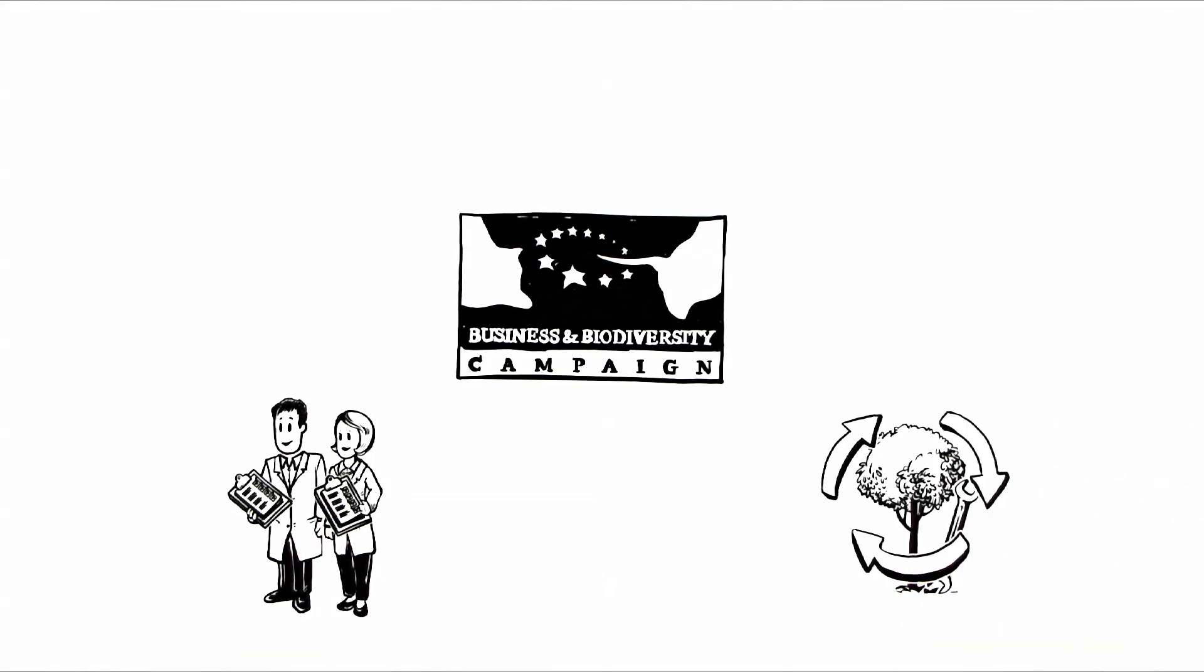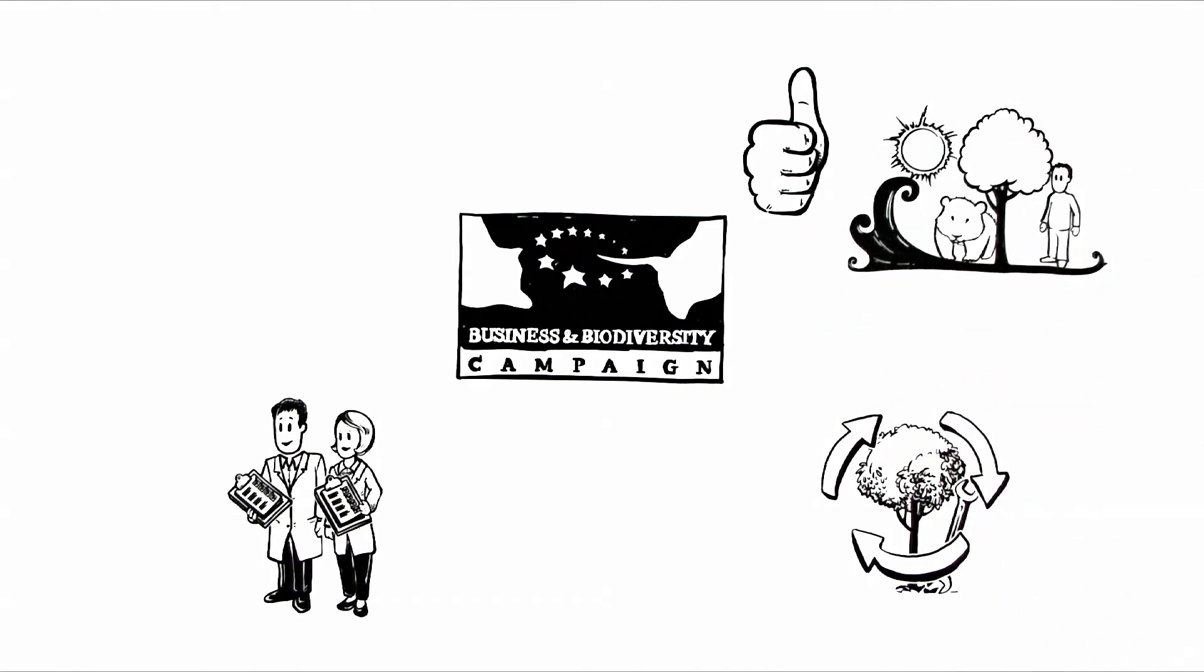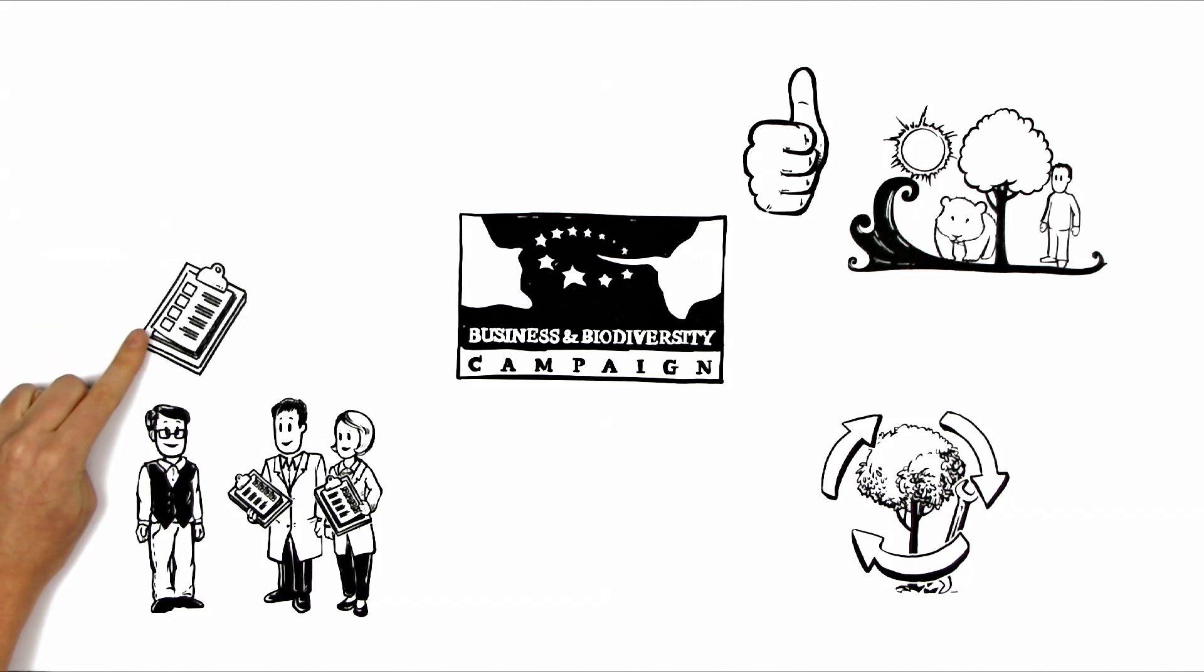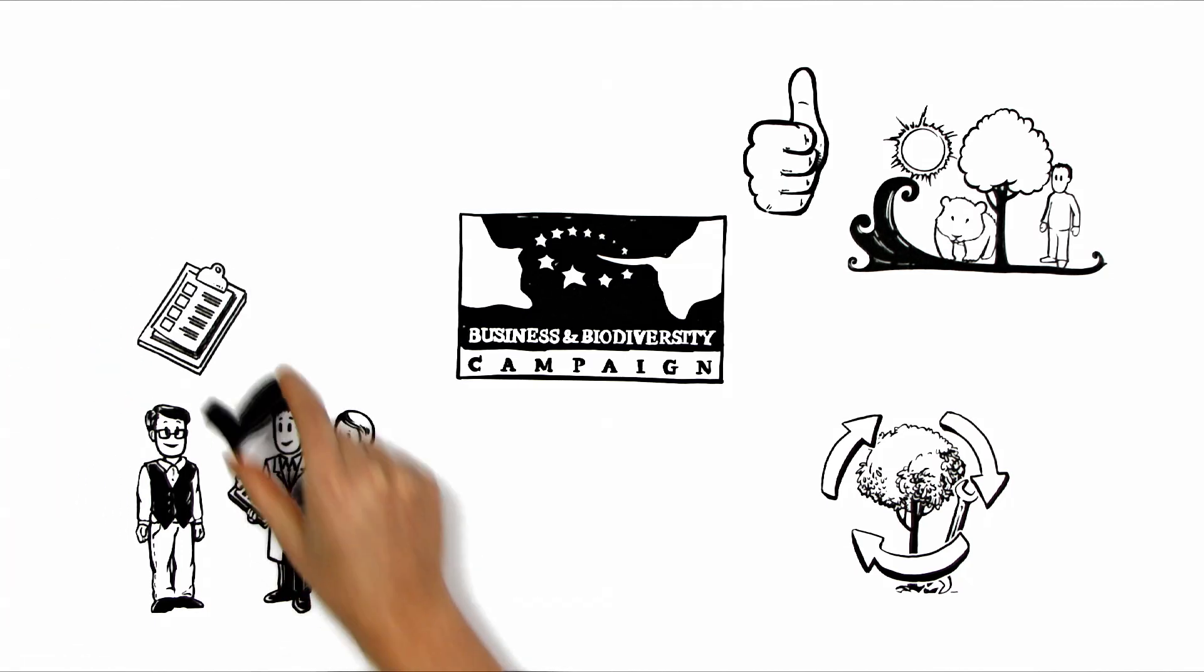EBBC has the solution. A confidential biodiversity check. In accordance with the environmental management systems, the check shows how companies can have a positive effect on biodiversity. Michael has the check carried out and uses the freely available results to implement the necessary measures.